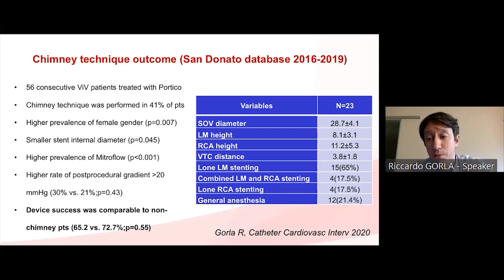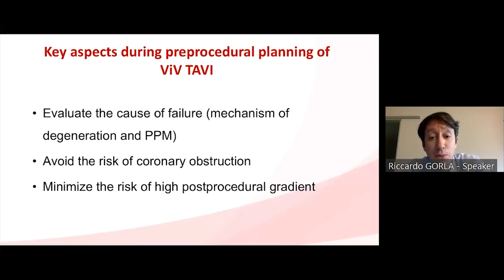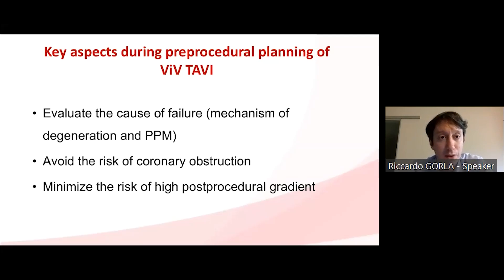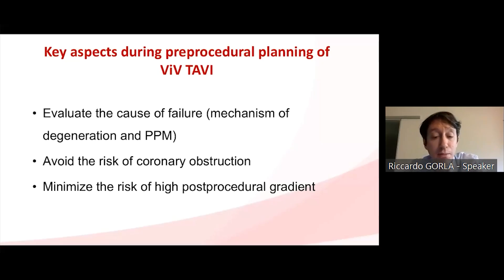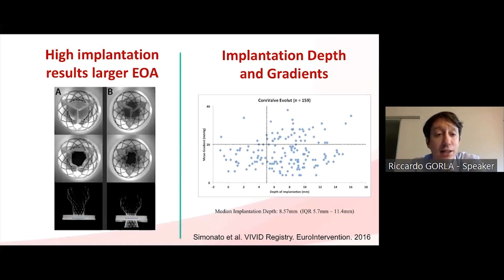The next step is to minimize the risk of high post-procedural gradient. After coronary obstruction, this is the second most important problem to deal with in valve-in-valve TAVR. Literature has demonstrated that a high implant results in a larger EOA.